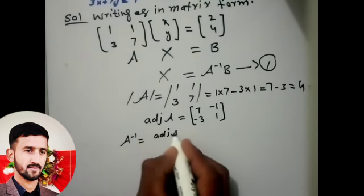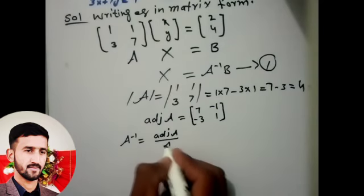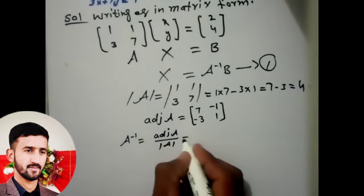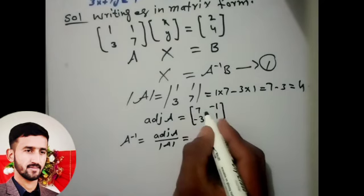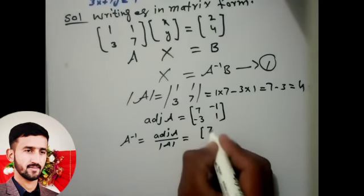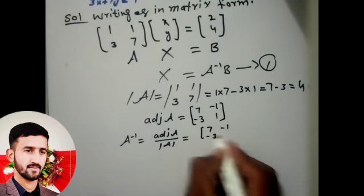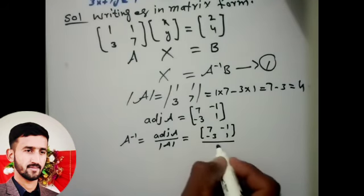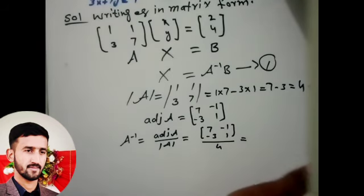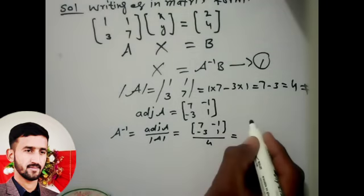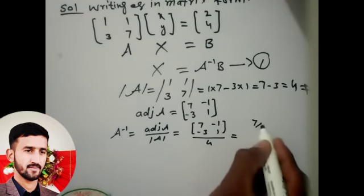Adjoint A divided by determinant A is equal to adjoint of A divided by 4, equals [7/4, -1/4; -3/4, 1/4].